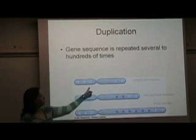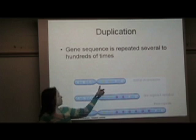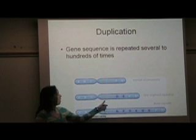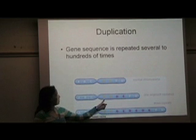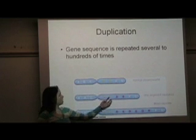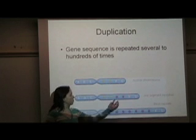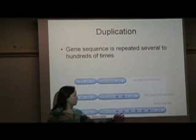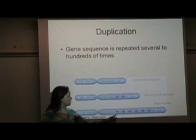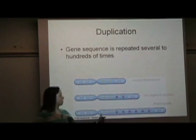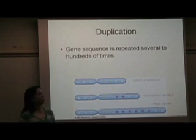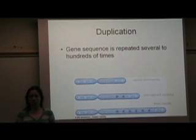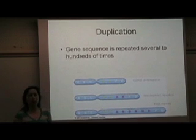Here is our regular chromosome ABCDEFG, and here that DE segment has been repeated twice. Here it's been repeated three times, so it can be repeated one or multiple times, and that's called a duplication.